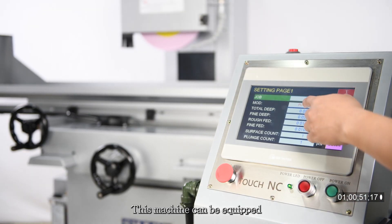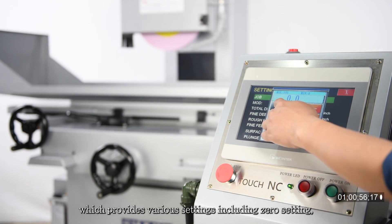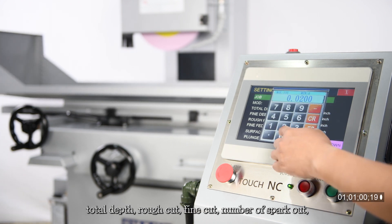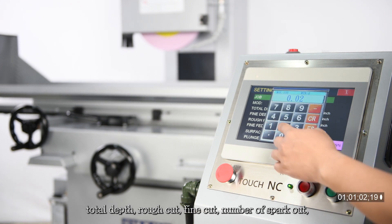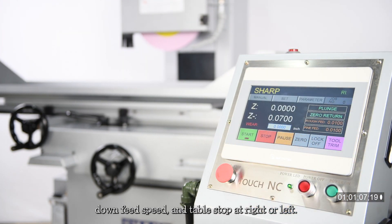This machine can be equipped with an NC spindle down feed system, which provides various settings including zero setting, total depth, rough cut, fine cut, number of spark out, down feed speed, and table stop at right or left.